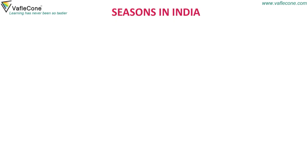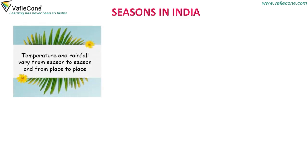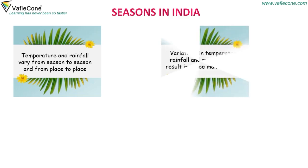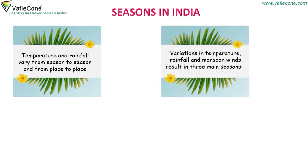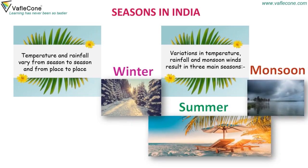Seasons in India. Temperature and rainfall vary from season to season and from place to place. Variations in temperature, rainfall and monsoon winds result in three main seasons: winter, summer and monsoon.